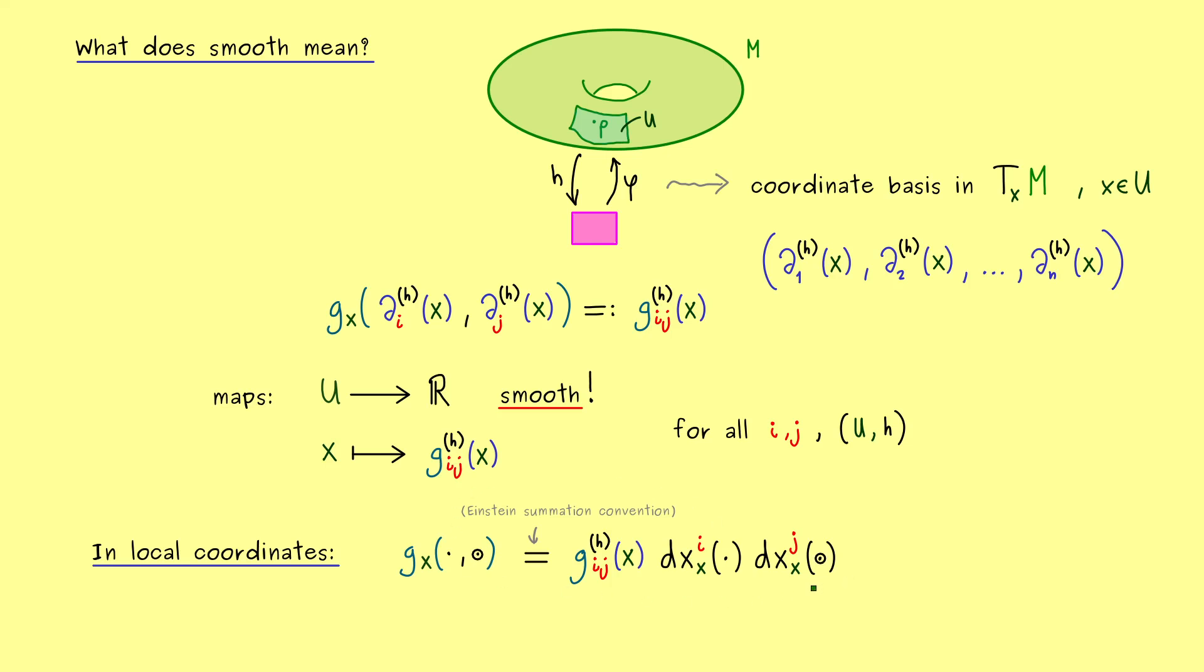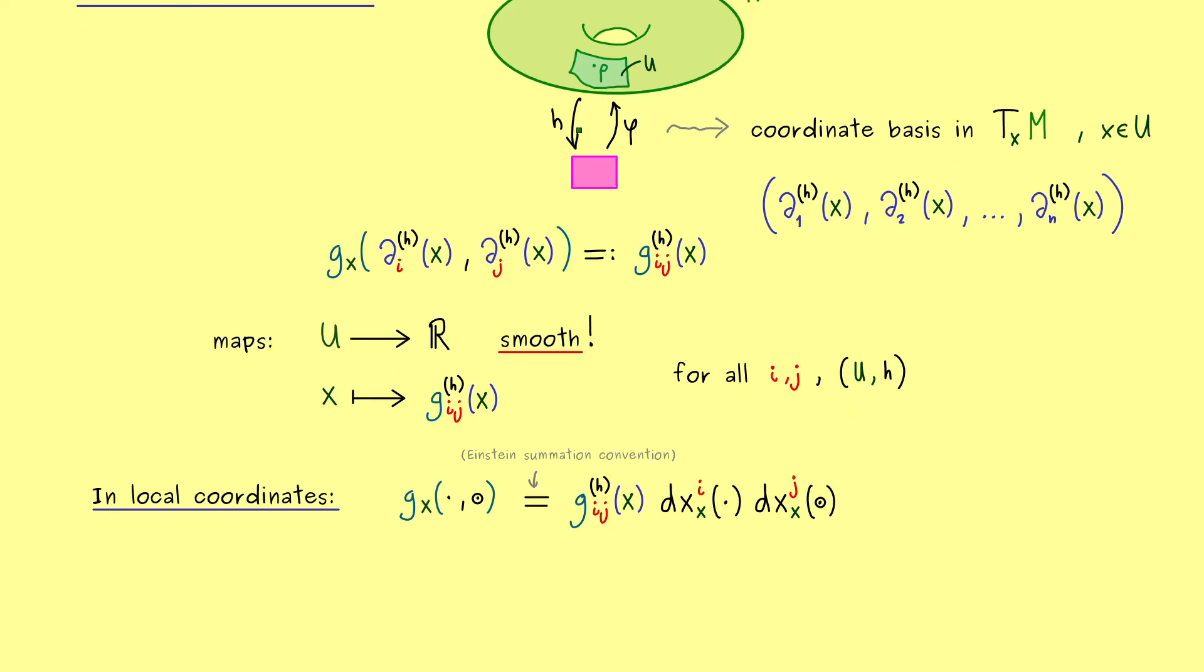It's not so important because we have the symmetry of the inner product anyway. Okay, and with this formula you see instead of giving an abstract Riemannian metric you can just give these functions g_ij. But obviously you have to do it for every local chart you have.